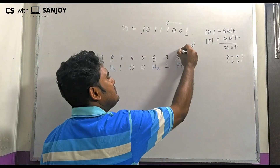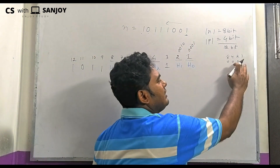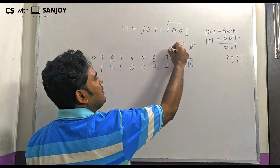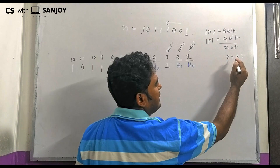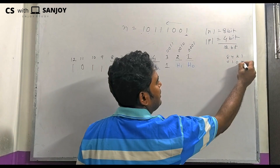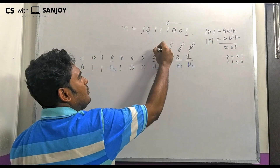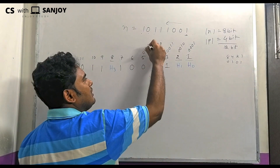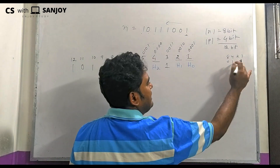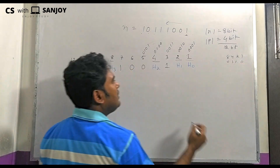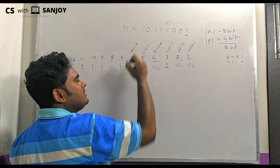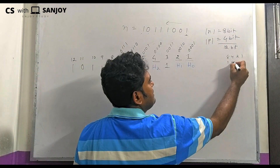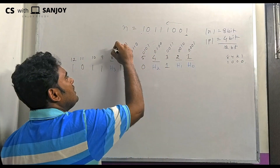Continuing the binary representations: position 5 is 0101, position 6 is 0110, position 7 is 0111, position 8 is 1000, and position 8 again confirms 1000.